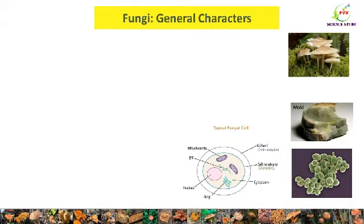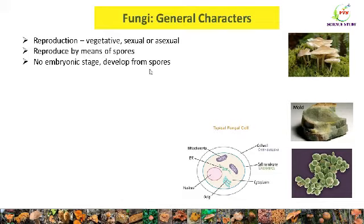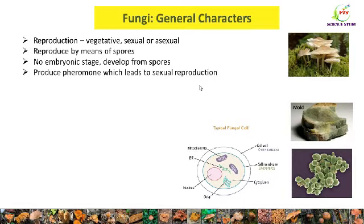Now we will study other general characters of fungi. Fungi reproduce by three different methods: vegetative, sexual, or asexual. Fungi also reproduce by means of spores. No embryonic stage is observed in fungi — they develop directly from spores. Fungi also produce pheromones which lead to sexual reproduction. Fungi also show alternation of generation in their life cycle, meaning one generation alternates with another generation.